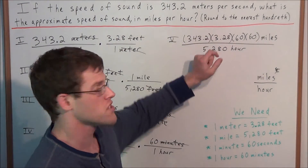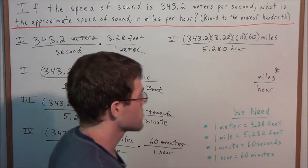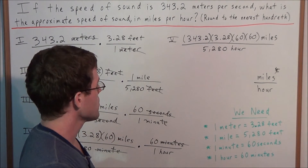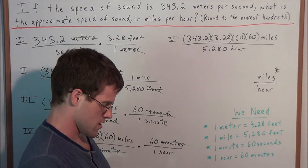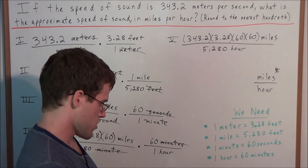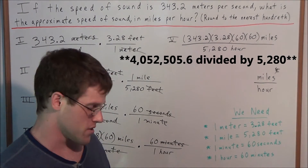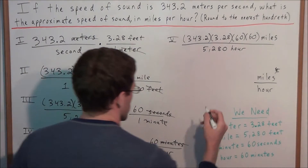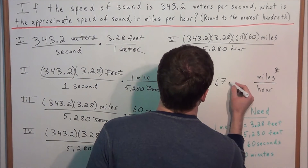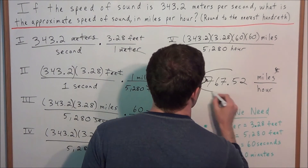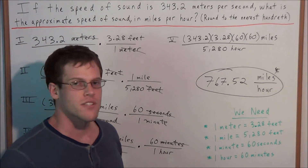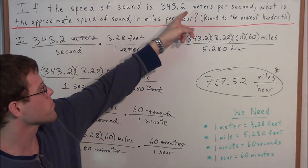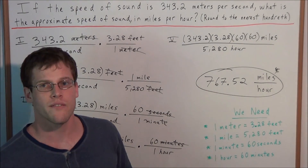The only thing left to do is calculate. We multiply 343.2 times 3.28 times 60 times 60, which gives 4,052,505.6, and then divide by 5,280. This gives us a final answer of 767.52 miles per hour. So this is how we use conversion analysis to convert 343.2 meters per second to 767.52 miles per hour.